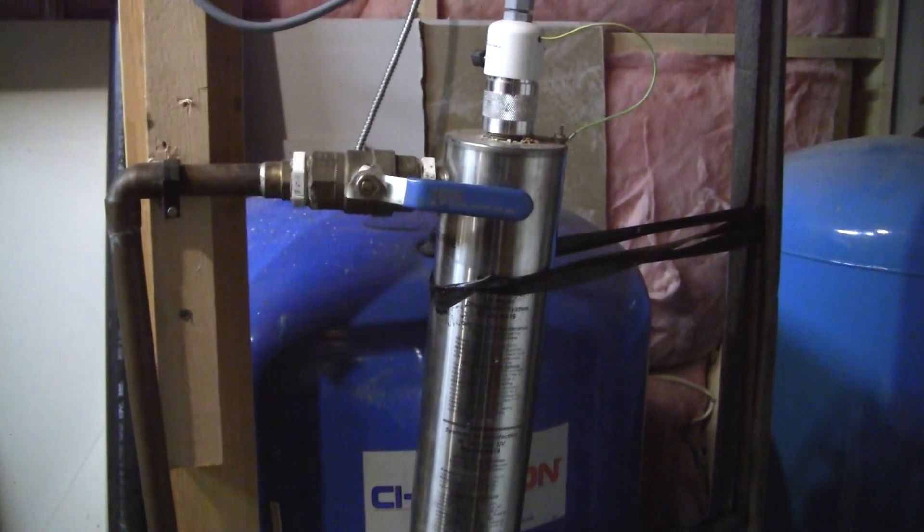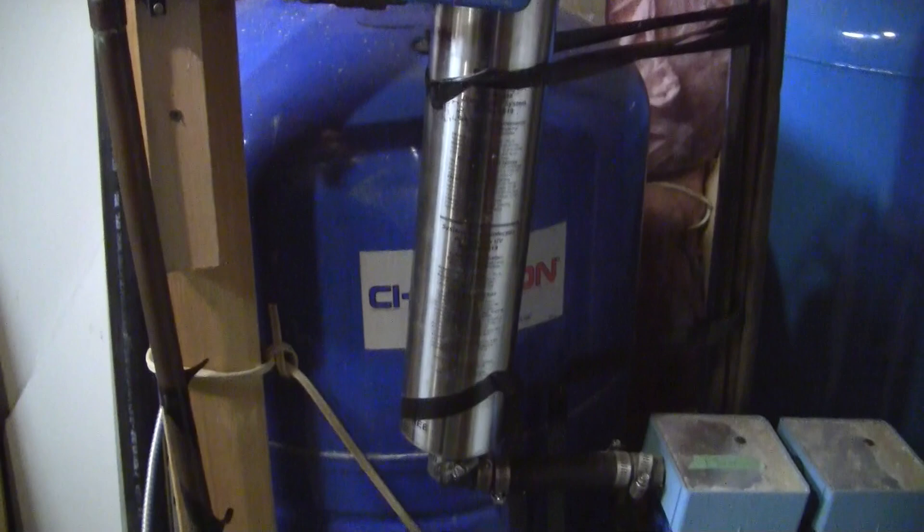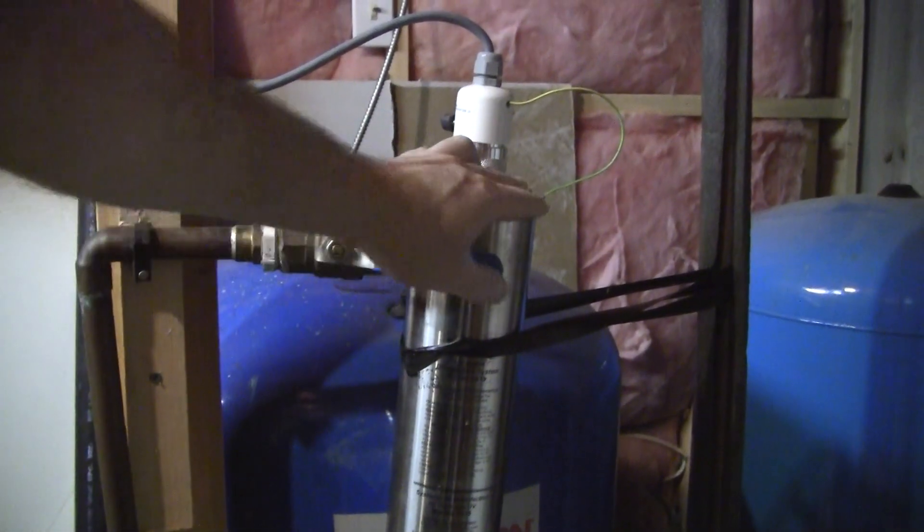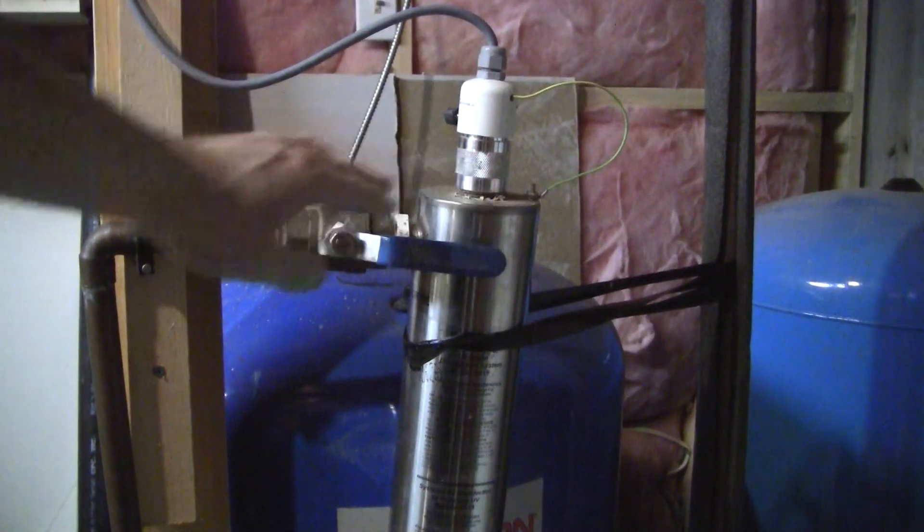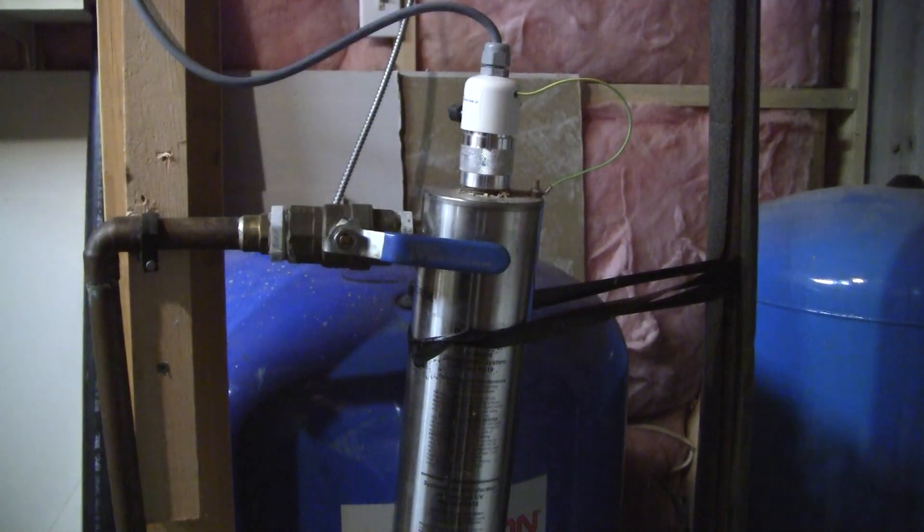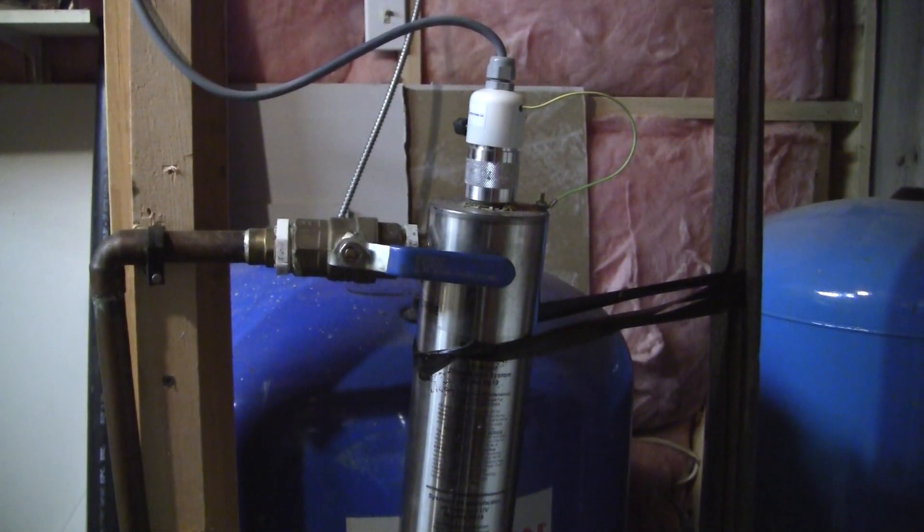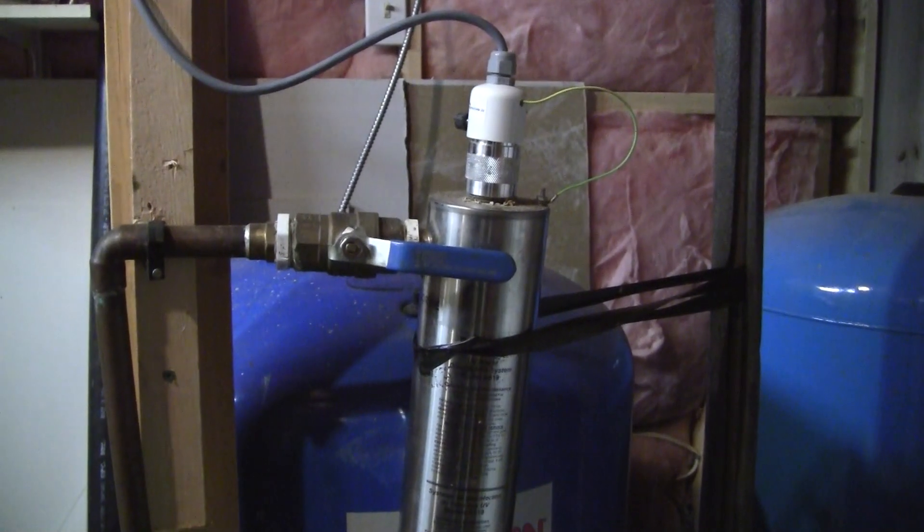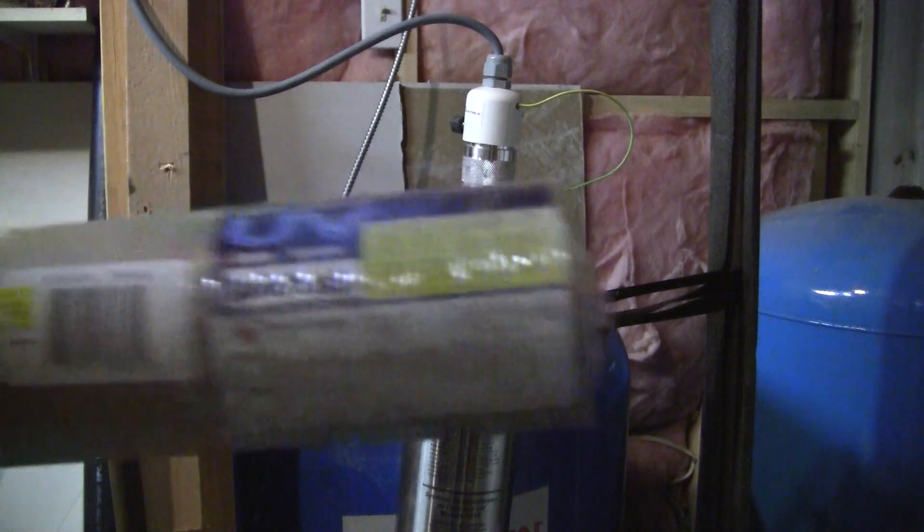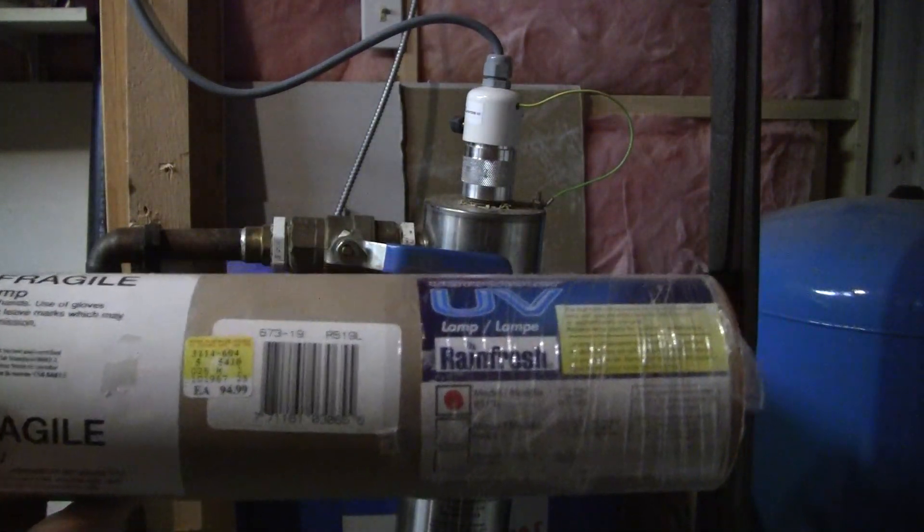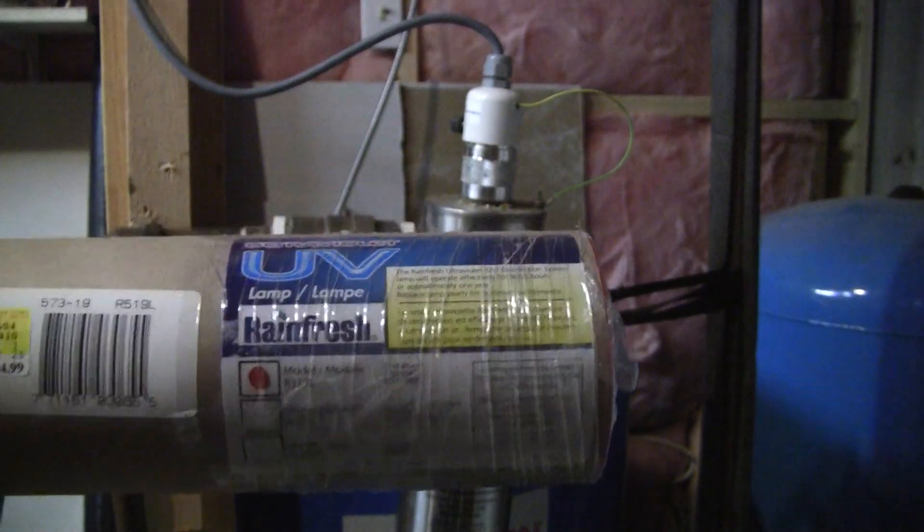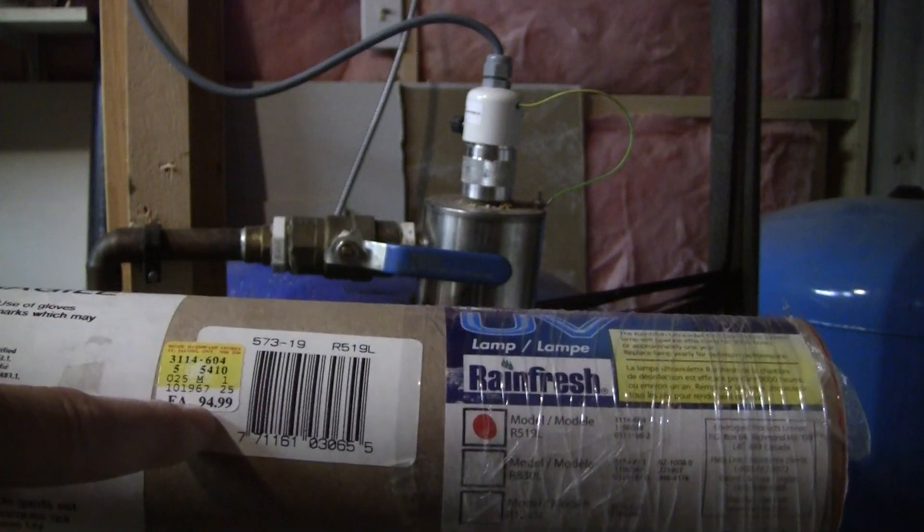This is the UV light germicide bulb that supposedly kills 99.9% of the germs that come into the house from surface contaminants into our shallow well. So when that thing buzzes about once a year, it's on a timer, it's time to go down to Mowitz on Salt Spring Island and buy a brand new replacement light bulb. This is the Rainfresh UV ultraviolet light bulb. In Canadian dollars, I paid $94.99.